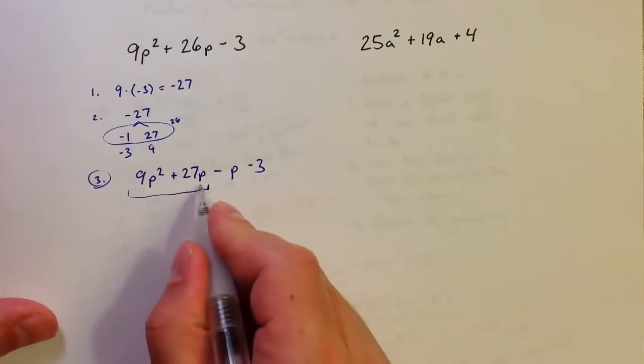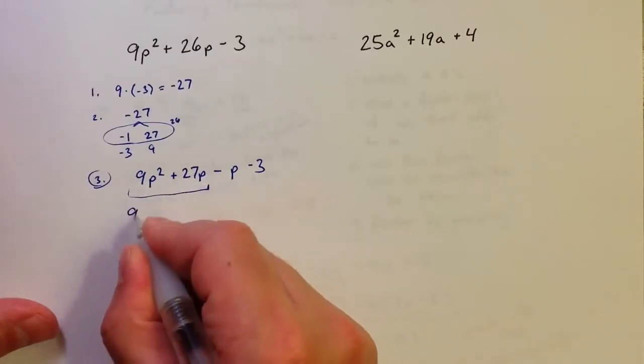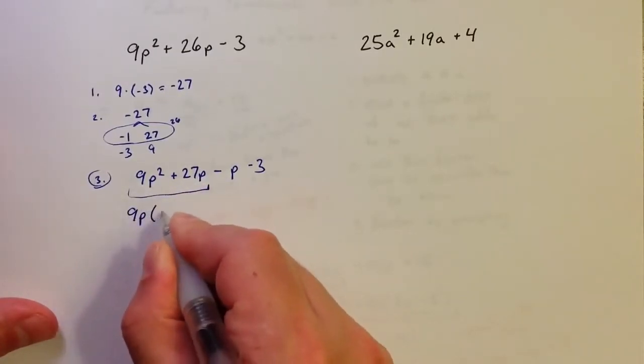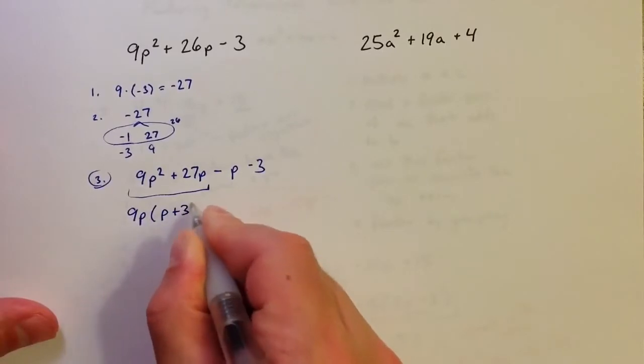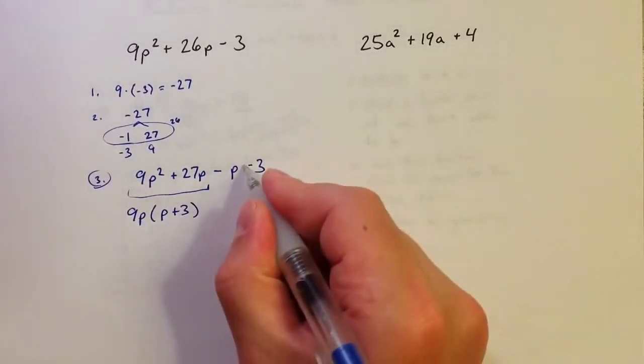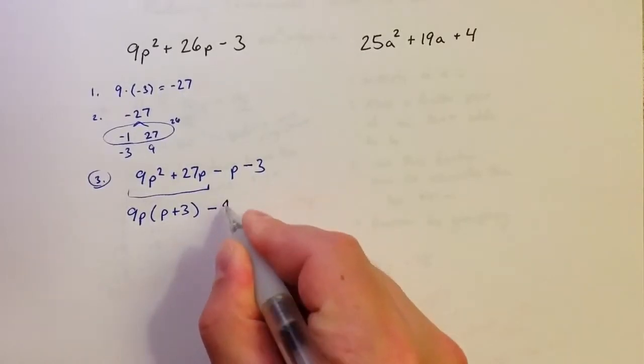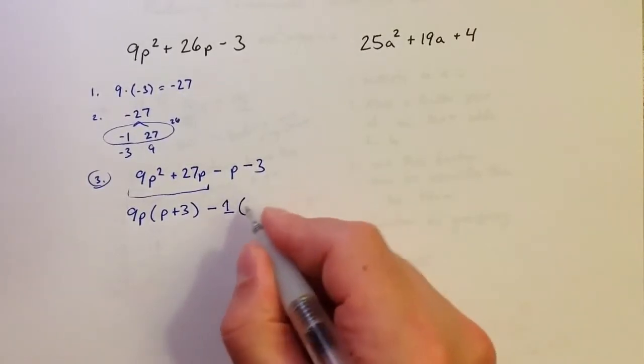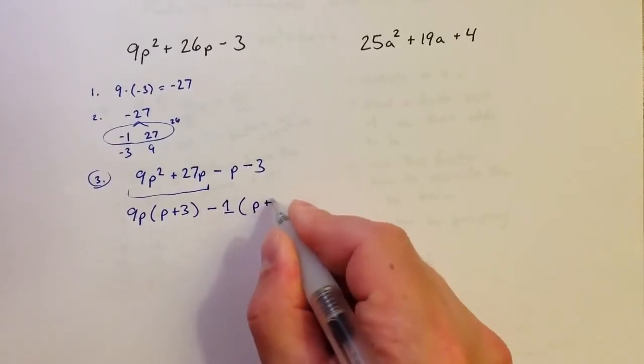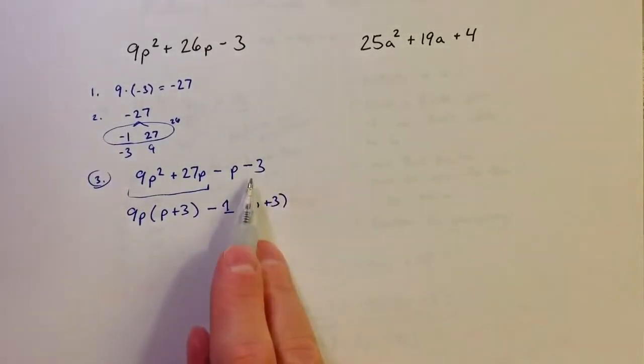So this way, I can factor out a 9p and what's left behind is p plus 3. The second one, I have a negative p and a negative 3. So I want to factor out a negative 1 and then what's left behind is p plus 3. Because if I factor a negative from both of those terms, then the minus that was in front of the 3, it becomes a plus because the minus sign is now out in front.